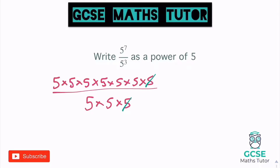I can do the same with the next one. So there's another five on the top, another five on the bottom — that's another one cancelled out — and another five on the top and another five on the bottom. So actually all we've got left: we've now got no fives left on the bottom, but we've got these four fives on the top. And four fives being multiplied together, we can write that as five to the power of four.